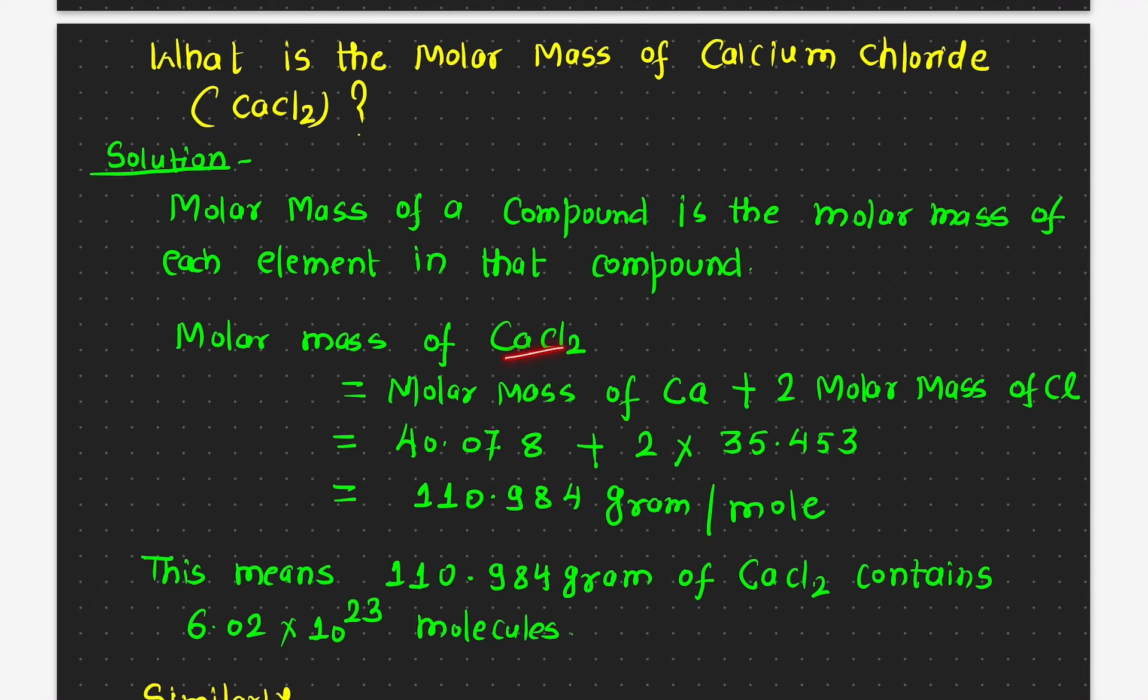First, we have to find out the molar mass of individual elements. We have one calcium and two chlorine, and we have to add them together. Molar mass of calcium plus two units of molar mass of chlorine.